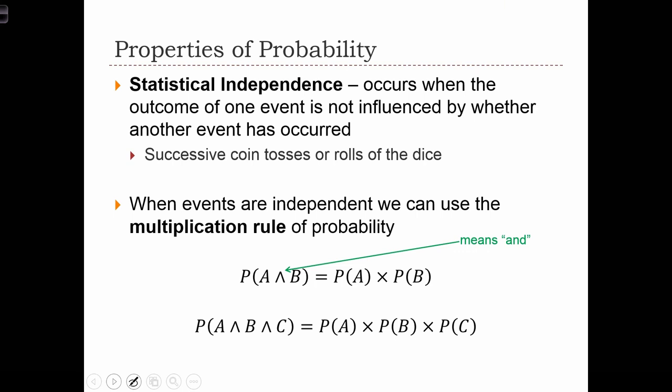Another important property of probability is the notion of statistical independence, which occurs when the outcome of one event is not influenced by whether or not another event has occurred. The typical case to illustrate statistical independence is with successive coin tosses or rolls of the dice.